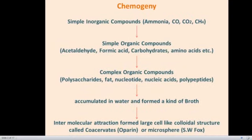Let us have a brief introduction about chemogeny. In chemogeny, various simple inorganic compounds like ammonia, carbon monoxide, carbon dioxide, and methane reacted together under primitive conditions on primitive earth and formed simple organic compounds such as acetaldehyde, formic acids, carbohydrates, and various types of amino acids.